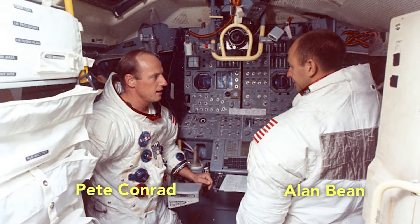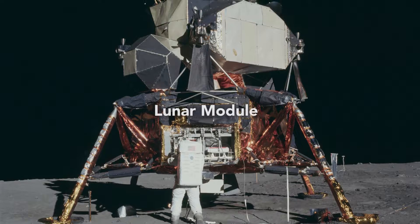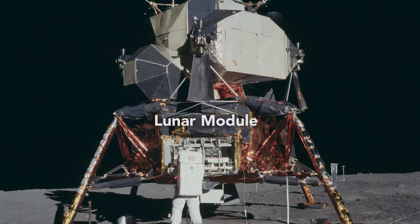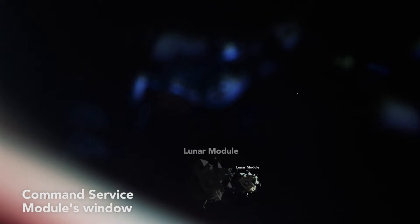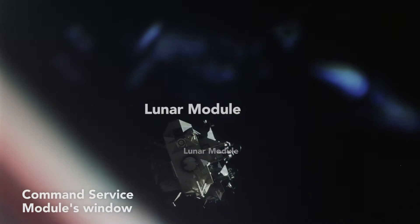Through it the astronauts sighted on stars and used that information to align the gyroscopes of their inertial measurement unit, the device that kept track of the module's position when it traveled through space, which was essential in navigating the module's return and docking with the orbiting command module.